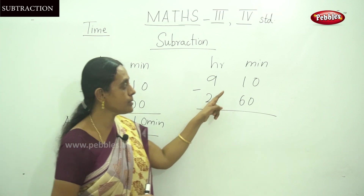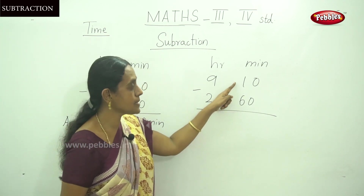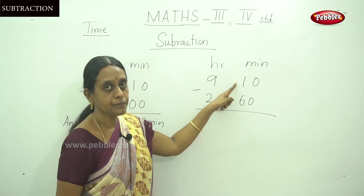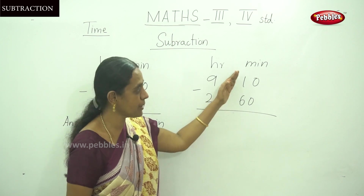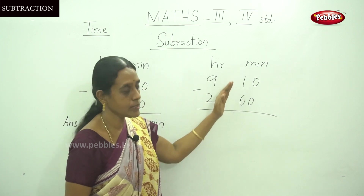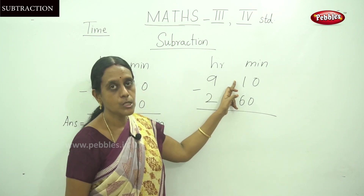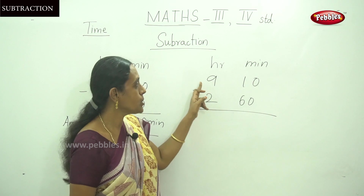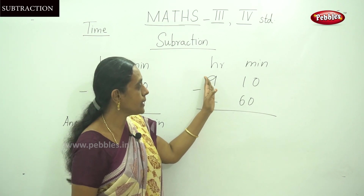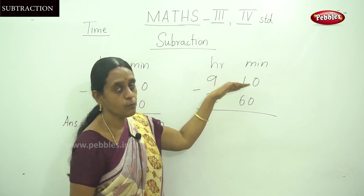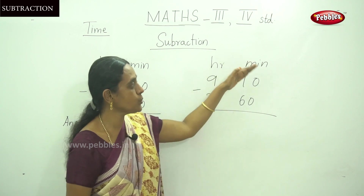You have to subtract 2 hours 60 minutes from 9 hours 10 minutes. Here you can't subtract 60 from 10, because 60 is a bigger number and 10 is a smaller number. So you have to carry over — give 1 hour, that is 60 minutes, to this.